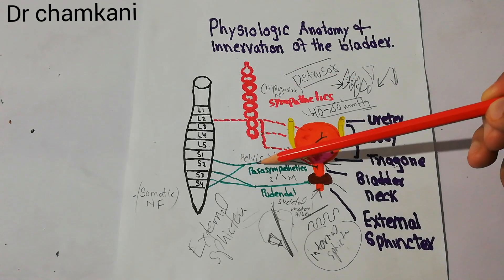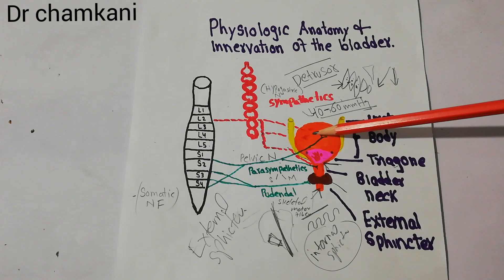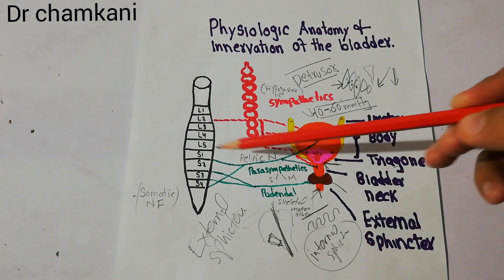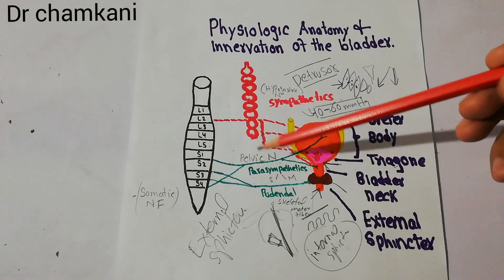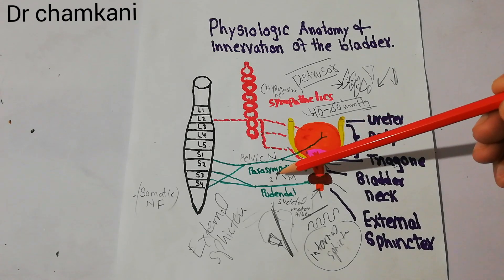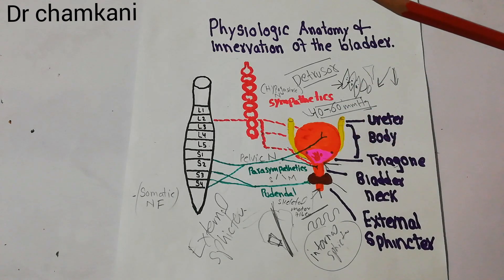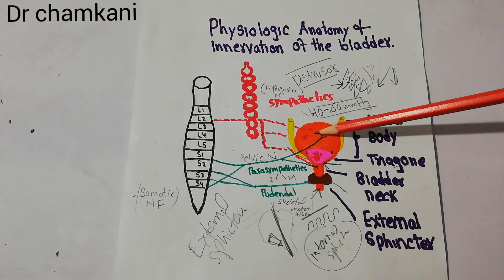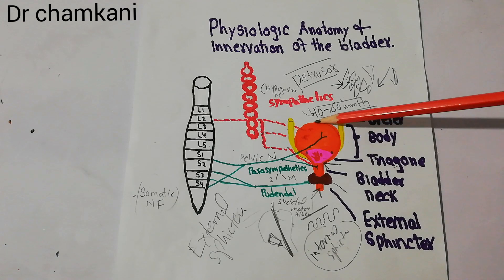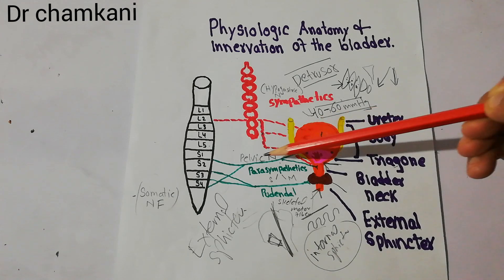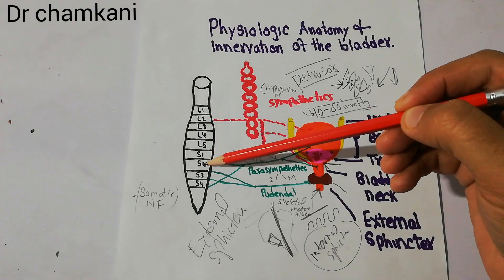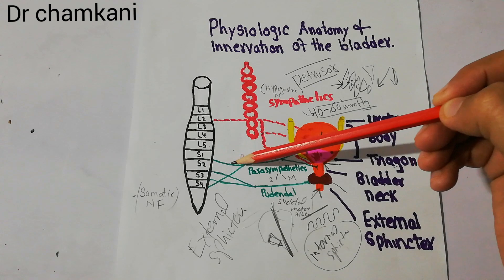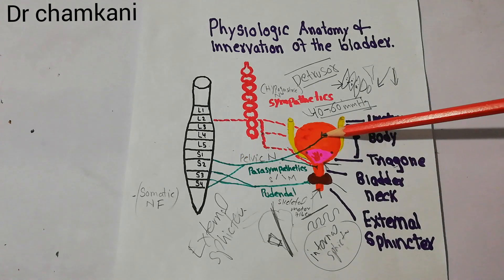The pelvic nerve is basically the main supply of the urinary bladder and it connects with the spinal cord through the sacral plexus. The pelvic nerve has both sensory and motor components. The sensory component takes signals from the urinary bladder towards the spinal cord, and the motor signals come from the spinal cord through the pelvic nerve to the muscle mass of the urinary bladder.